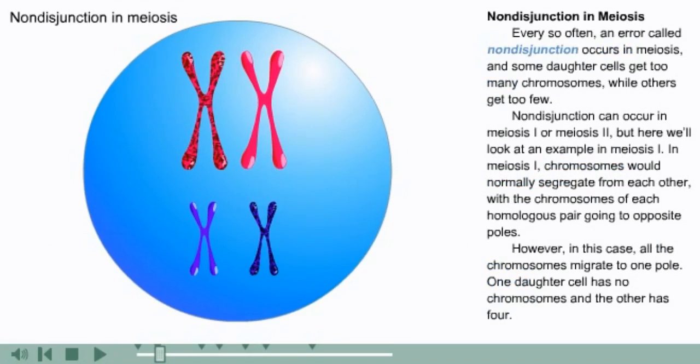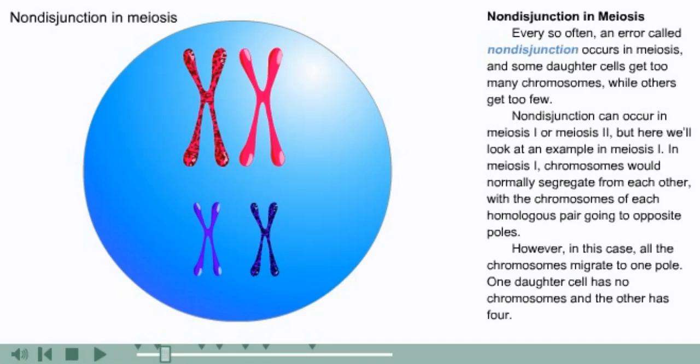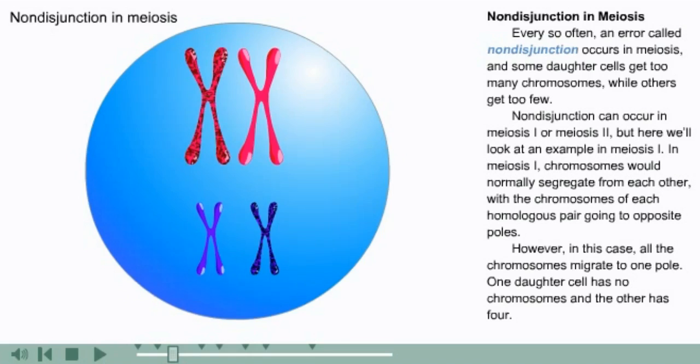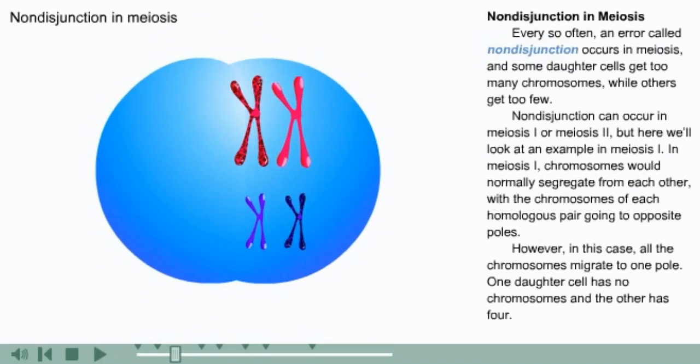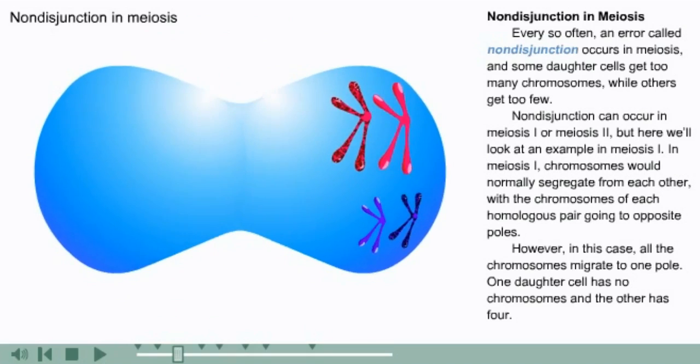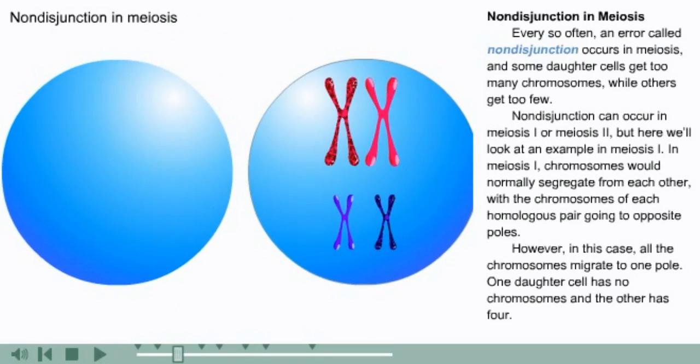Every so often, an error called non-disjunction occurs in meiosis, and some daughter cells get too many chromosomes while others get too few. Non-disjunction can occur in meiosis one or meiosis two, but here we'll look at an example in meiosis one. In meiosis one, chromosomes would normally segregate from each other, with the chromosomes of each homologous pair going to opposite poles. However, in this case, all the chromosomes migrate to one pole.